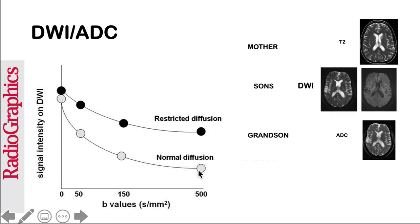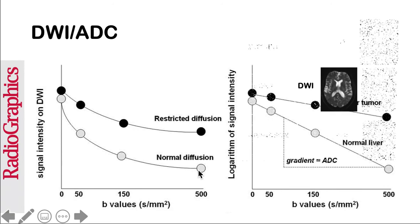If we rewrite this graph and plot it in a logarithmic scale, we will see something like this. There is slow loss of signal in the liver tumor, while there is fast loss of signal for the normal liver parenchyma.